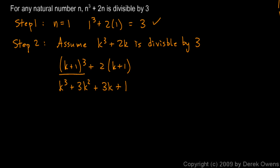That's that part, the k plus 1 cubed. We still have this plus 2k plus 1. And let's distribute the 2. So we have plus 2k plus 2.